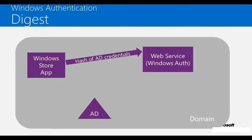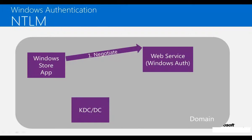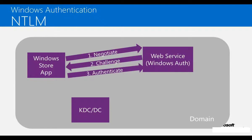Even though we send the hash of the credentials in Digest authentication, techniques like brute force can be used to compromise security. In NTLM authentication, first a negotiation happens between the client and the service, and both settle on an authentication mechanism. If NTLM is chosen, instead of sending credentials or hash of credentials, a random number called a challenge is sent by the service to the client. The client then generates an authenticate message based on the hashed credentials and the challenge, making it more secure than Digest and Basic authentication.